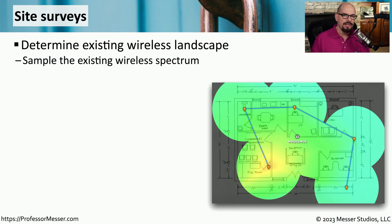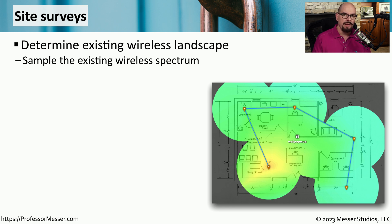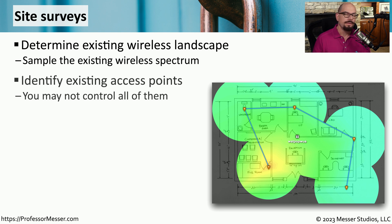If you're installing a new wireless network or you're troubleshooting an existing wireless network, you may want to consider performing a site survey. This allows you to better understand how your wireless network may perform, and it might also give you some insights into how other networks around you may be affecting your signal. One of the first steps of a site survey is to get a better understanding of what access points may be currently installed.